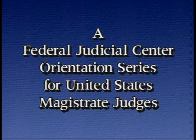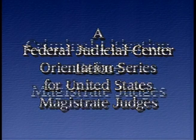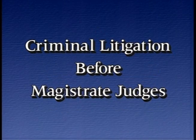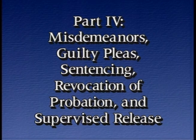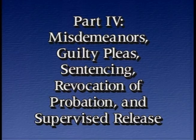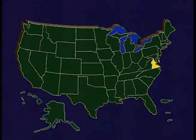A Federal Judicial Center orientation series for United States Magistrate Judges: Criminal Litigation Before Magistrate Judges, Part 4 — Misdemeanors, Guilty Pleas, Sentencing, Revocation of Probation and Supervised Release, with the Honorable Tommy E. Miller. Judge Miller was appointed United States Magistrate Judge for the Eastern District of Virginia in 1987. He is an officer of the Federal Magistrate Judges Association and serves on the Federal Judicial Center's Committee on Magistrate Judge Education.